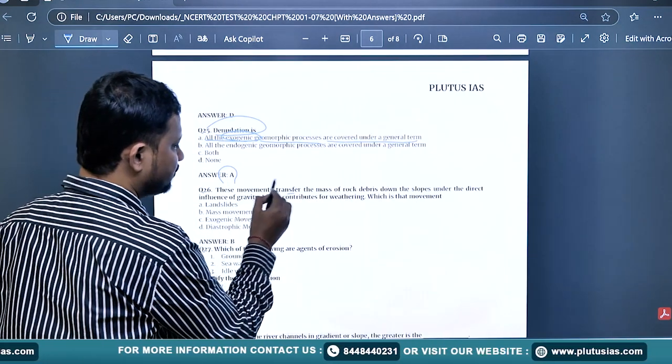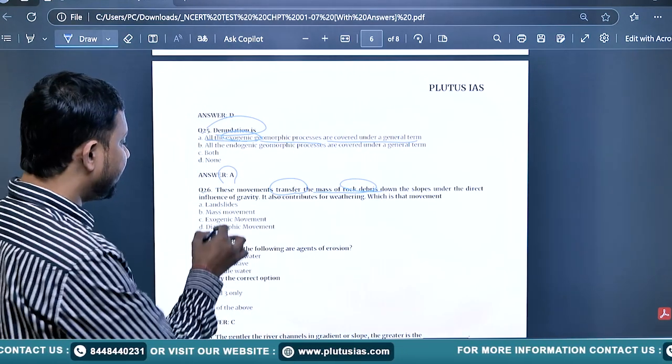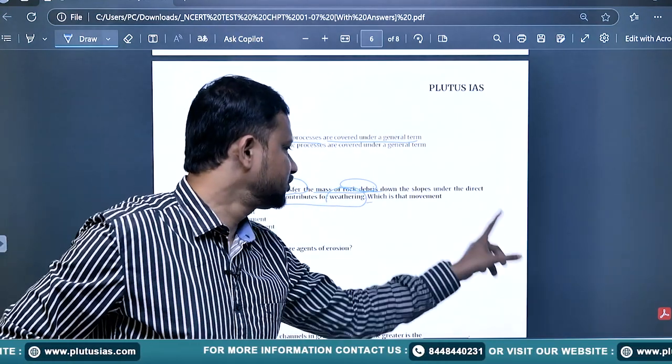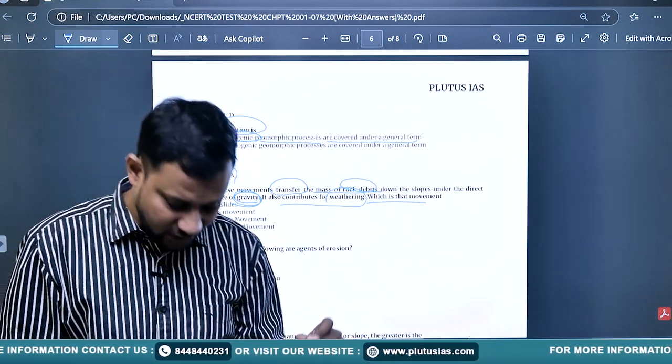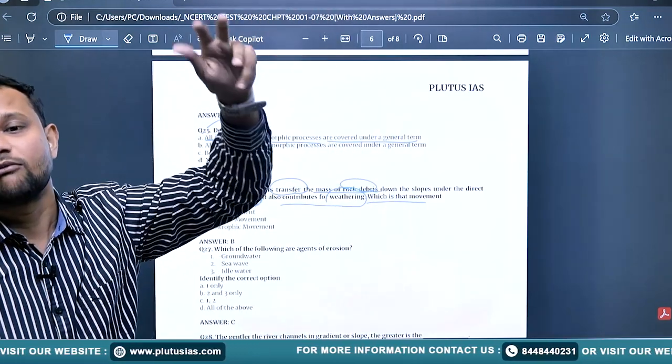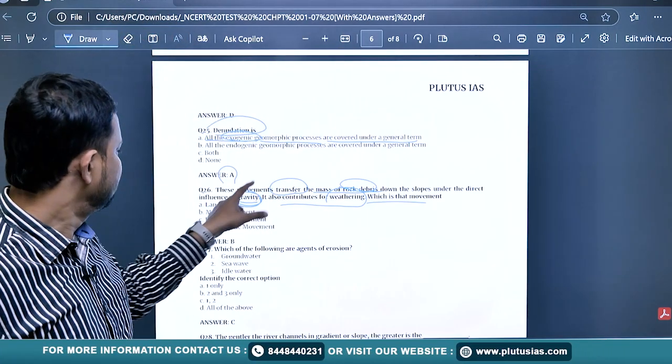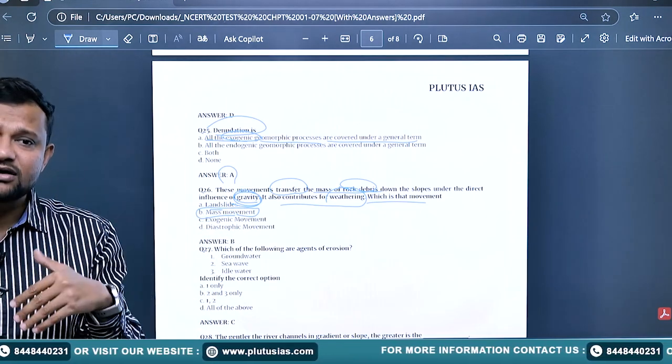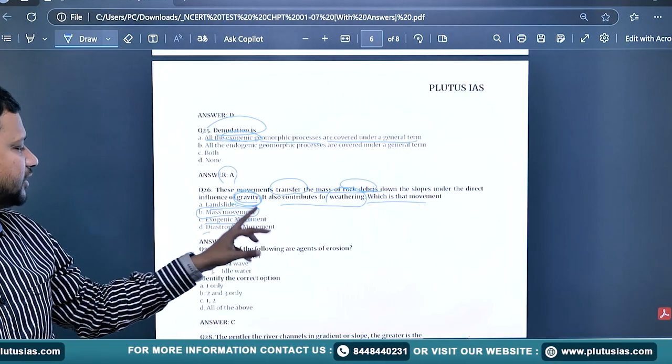Denudation has three different branchings: weathering, erosion, and mass wasting. Weathering is a form of exogenic. Erosion is exogenic. Mass wasting is exogenic. Geomorphic processes are covered under this general term - denudation. These movements transfer the mass of rock debris down the slope under the direct influence of gravity. It also contributes to weathering. Mass movement is when gravity is playing a strong role instead of water, wind, or any other factor. Landslides and other factors are equally contributing.